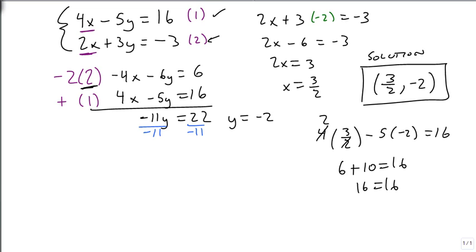So the entire point of elimination is: get two variables to be the same number and opposite signs, add the equations together so that that variable is eliminated, solve for the remaining variable, and then substitute it in and solve for the first variable.